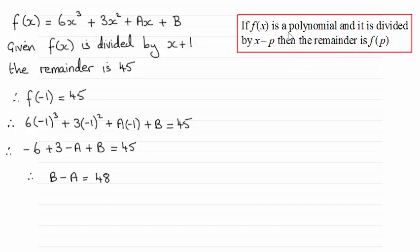But briefly, if f of x is a polynomial and it's divided by x minus p then the remainder is f of p.